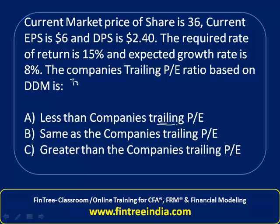Trailing P/E is simply the market price of the share divided by earnings per share. Market price is given as 36, and earnings per share is given as 6. So 36 divided by 6 gives a trailing price-to-earnings ratio of 6.